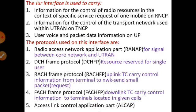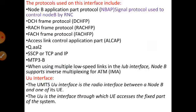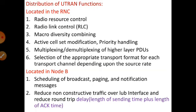Functions located in Node B include: scheduling of broadcast, paging, and notification messages. The main important function in Node B by UTRAN is to reduce non-constructive data traffic over IUB interfaces and reduce roundtrip delay. Roundtrip delay means calculating the length of sending time plus the acknowledgement time — if this time is very slow compared to the original value, that is the roundtrip delay. Up to this we finish the important 13-mark questions of Unit 3. Thank you.